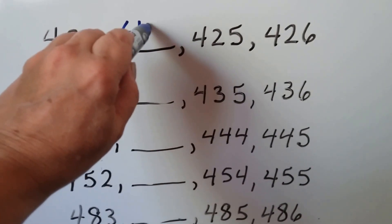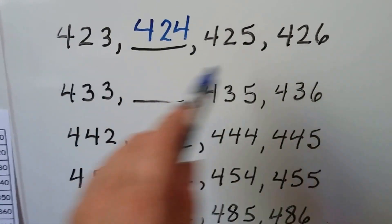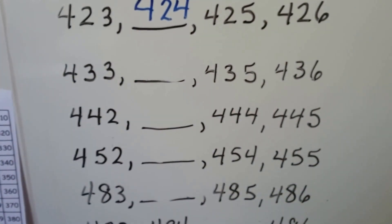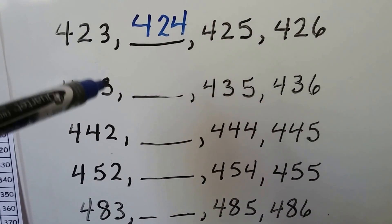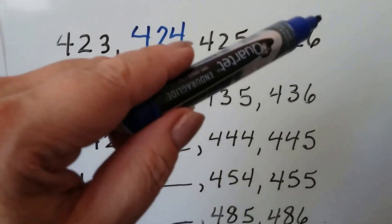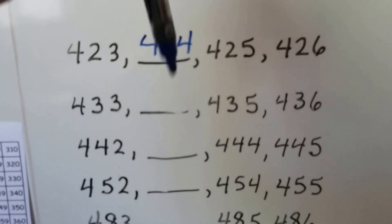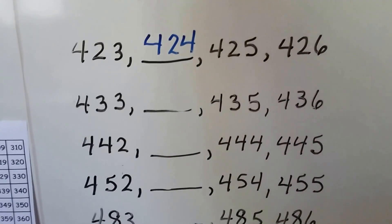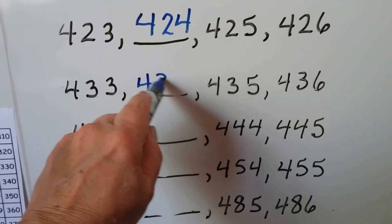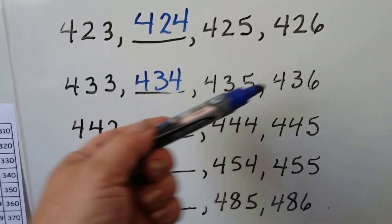Do you see what's happening in the ones place? The hundreds and the tens are staying the same, but the ones are going up: 3, 4, 5, 6. You could also look at the numbers above — this has a 3 in the ones place, that has a 5, that has a 6, but the tens are going up. So going down this way, instead of 424, that would be 434. Going across: 433, 434, 435, 436.